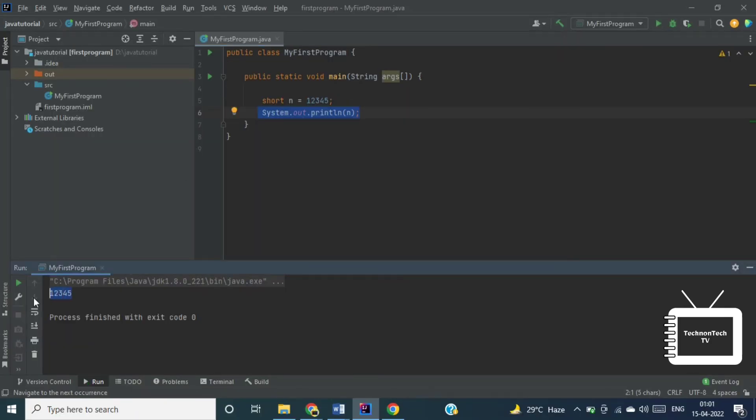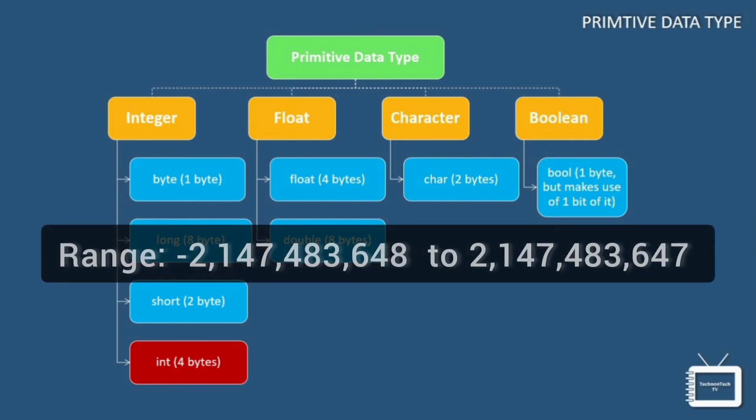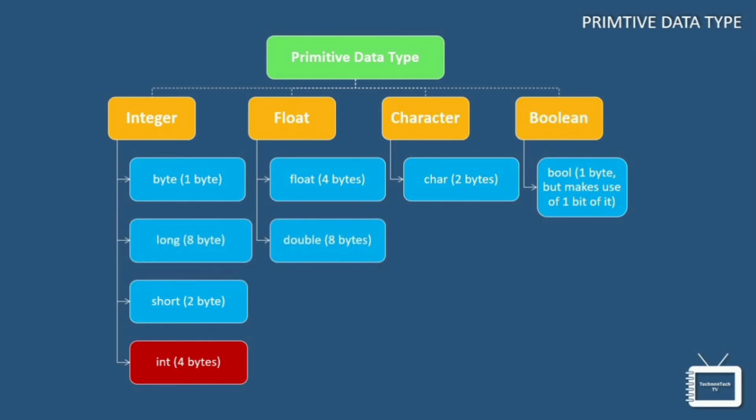So here we can see the output. Moving ahead, let's look at the next data type that is int data type. This data type can store whole numbers from this to this value. Generally int is the preferred data type when you create variables with numeric values.